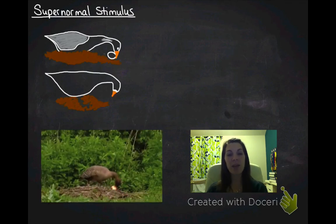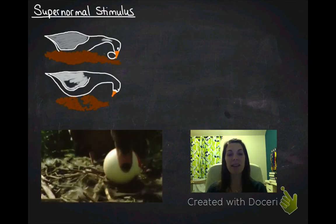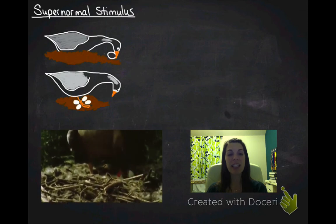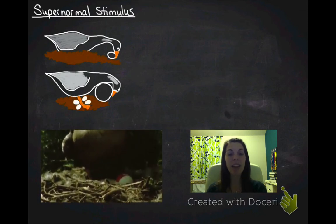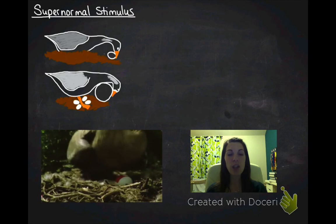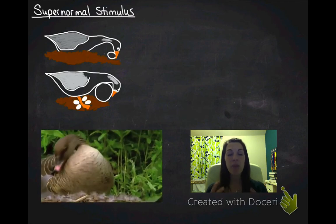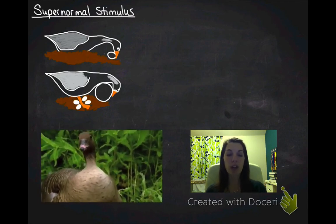I'm going to take that same goose, put it on that same nest, and instead of giving it its eggs, I'm going to give it a giant egg. What you see is that it preferentially will roll the larger egg.